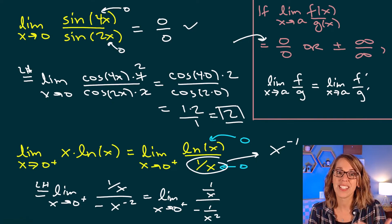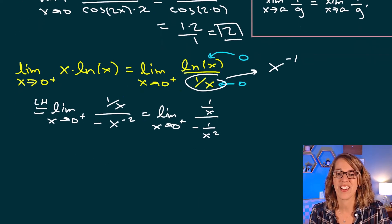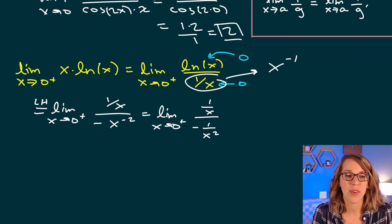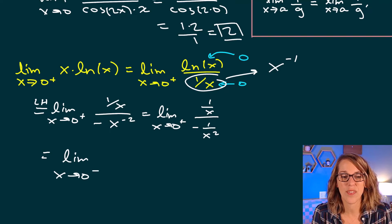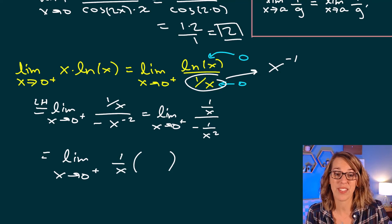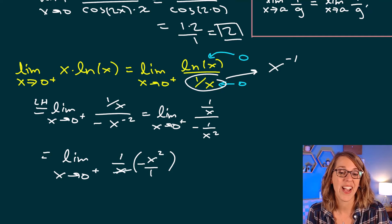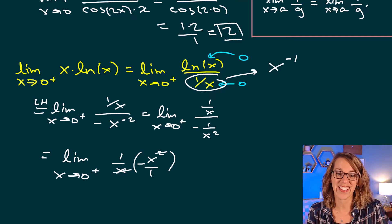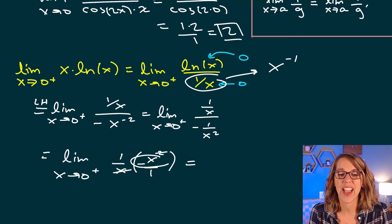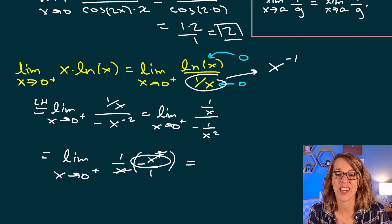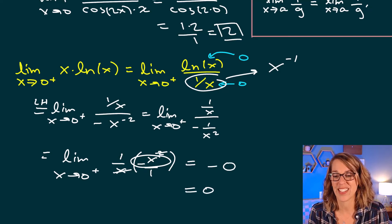I bring up the reciprocal of the denominator to simplify. I have 1 over X in the numerator multiplied by negative X squared, giving negative X squared over X. Canceling an X, the limit reduces to negative X. Direct substitution gives negative 0, which is just 0, and that's our answer.